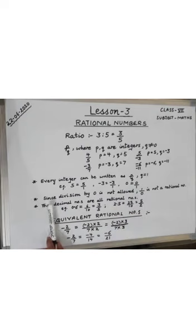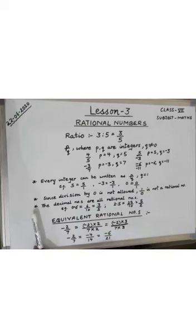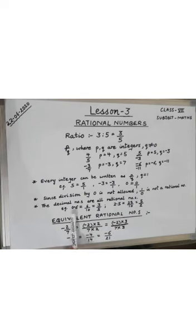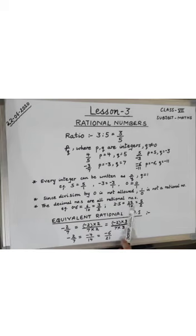Since division by 0 is not allowed, 1 upon 0 is not a rational number. The next point: decimal numbers are all rational numbers. For example, 0.6 can be written as 6 upon 10, and when reduced to lowest terms you get 3 upon 5, which is a rational number. Similarly, 2.5 can be written as 25 upon 10, which simplifies to 5 upon 2 — a rational number.